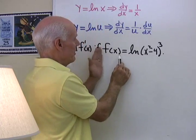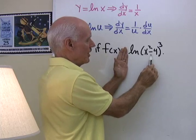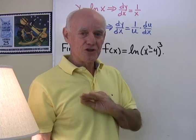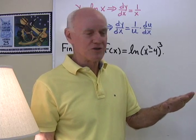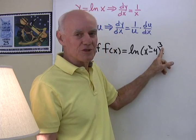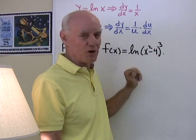So I want to find the derivative of f(x) equals natural log of x squared minus 4 to the third. Now you have a choice here. You can differentiate just straight across, just starting with this right here, or you can use the properties of logarithms to take that exponent and make it a coefficient first.